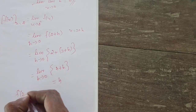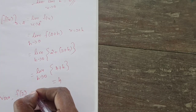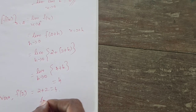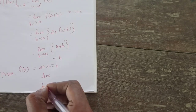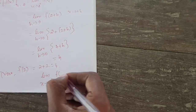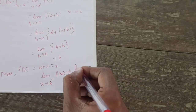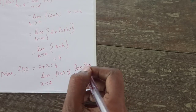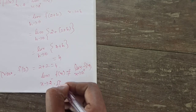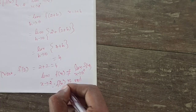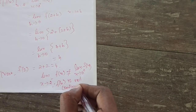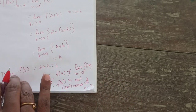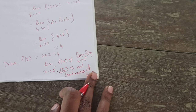Then find f of 2: substitute x equal to 2 into 2 plus x — that gives 2 plus 2 equals 4. Whether all are equal? No. The left hand limit equals 0 but the right hand limit equals 4 — both are not equal. Therefore f of x is not continuous at x equal to 2.